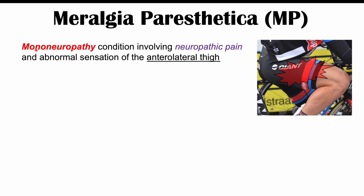Meralgia Paresthetica is a mononeuropathy condition involving neuropathic pain and abnormal sensation of the anterolateral thigh. It is a mononeuropathy condition, meaning that it involves one nerve. It involves neuropathic pain and abnormal sensation — numbness and tingling sensation with pain on the anterolateral thigh, so the front of the thigh and along the side.